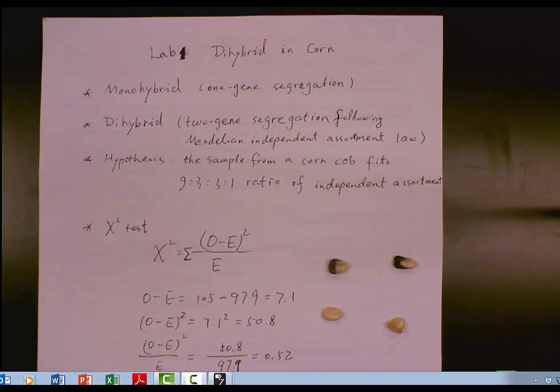In previous lab in Biology 1, we learned chi-square test for monohybrid that refers to one gene segregation. And this section is a continuous part of Mendelian genetics. So we will learn how two genes will segregate. The law is called Mendelian Independent Assortment Law.